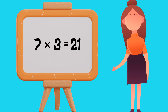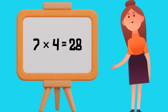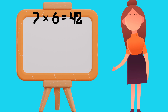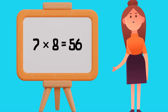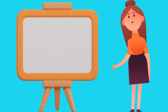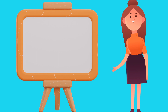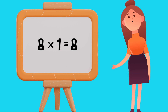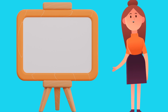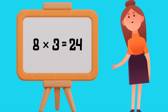Table of 7: 7 1's are 7, 7 2's are 14, 7 3's are 21, 7 4's are 28, 7 5's are 35, 7 6's are 42, 7 7's are 49, 7 8's are 56, 7 9's are 63, 7 10's are 70.